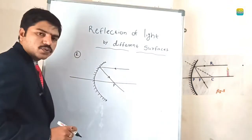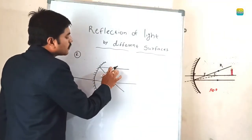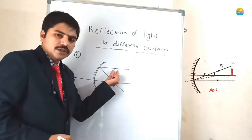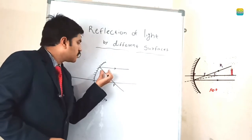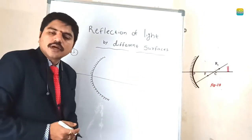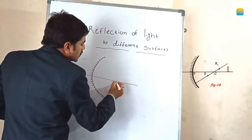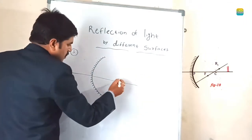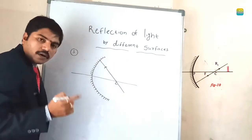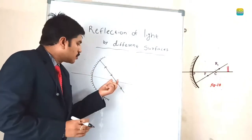The second condition is the vice versa of the first. If any ray is starting from or coming from the focal point, then after reflection from the concave mirror, the ray is parallel to the principal axis and goes to infinity. The third condition: if any ray is passing through the centre of curvature, then after reflection the ray passes through the centre of curvature only — it retraces the same path.